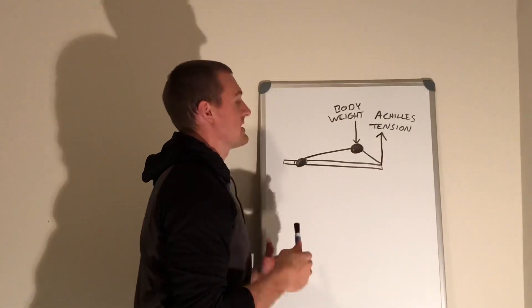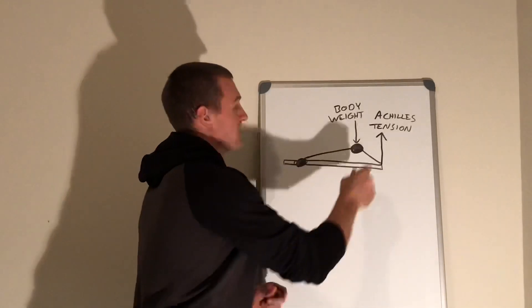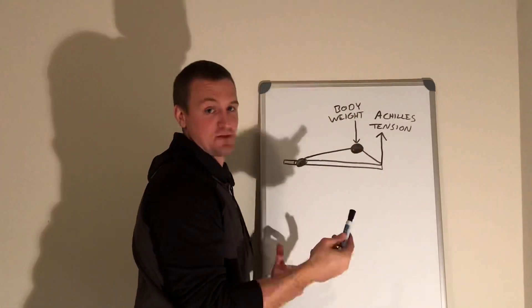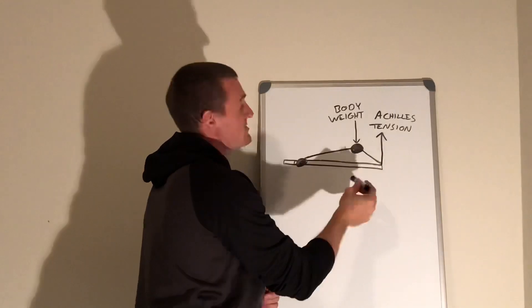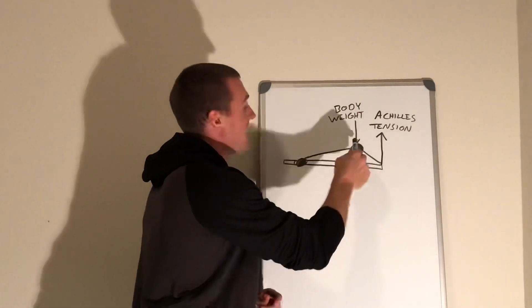Seems like a second class lever, right? But there's a key thing we have to point out: your Achilles attaches to your body through the calf muscles, so any tension pulling up on the heel is also pulling down on the body, increasing the force applied at the ankle.